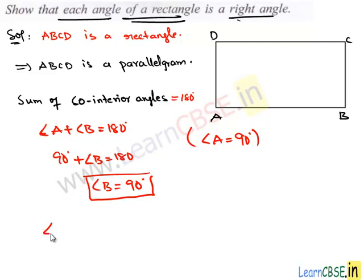Similarly, we can prove angle C and angle D are 90 degrees. How can we prove this? Because C and D are also co-interior angles, their sum must be 180 degrees. So in any rectangle, each angle is a right angle.